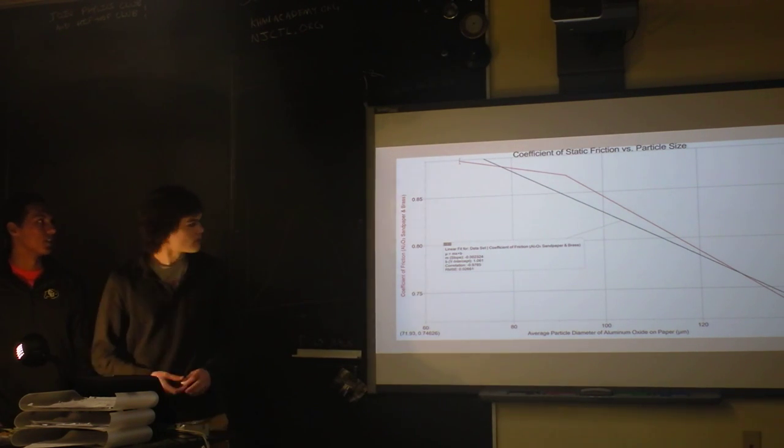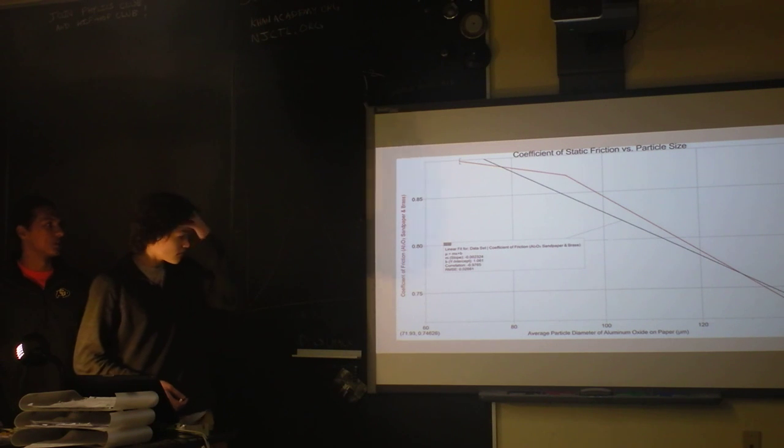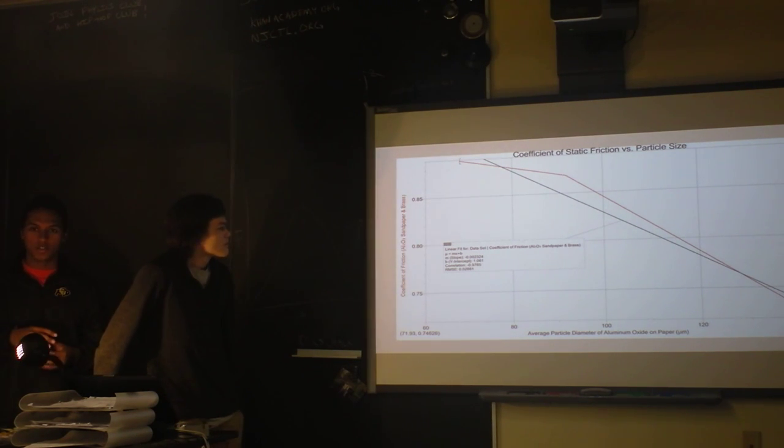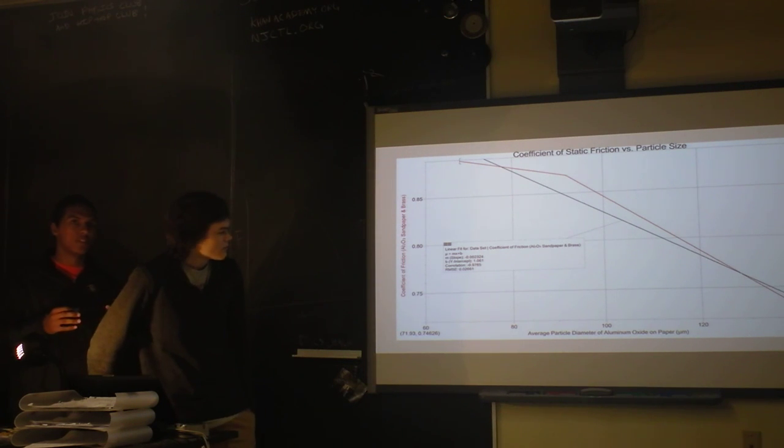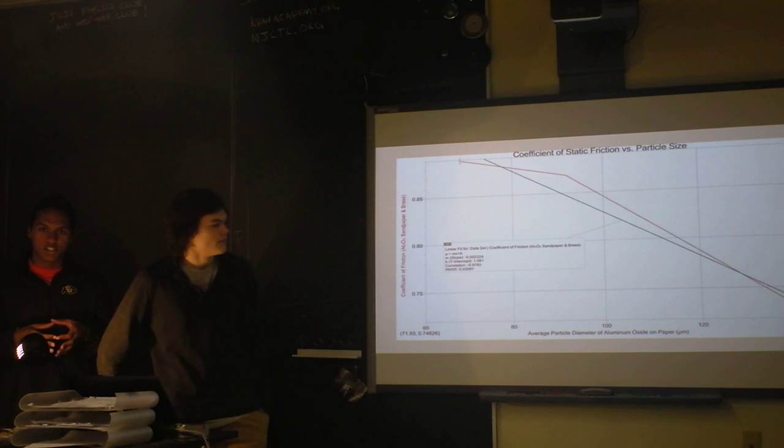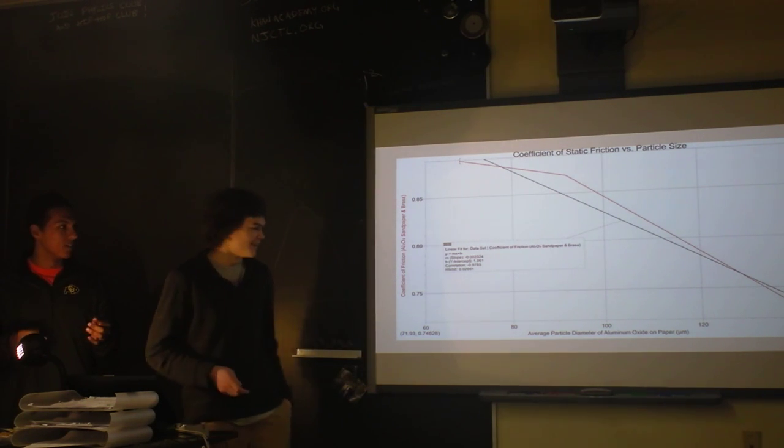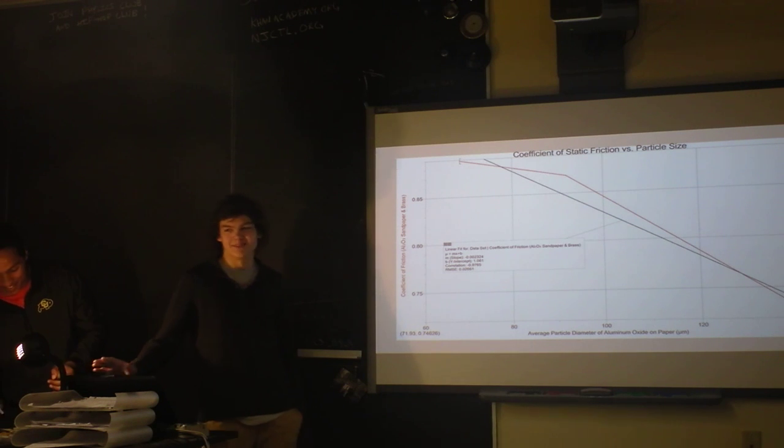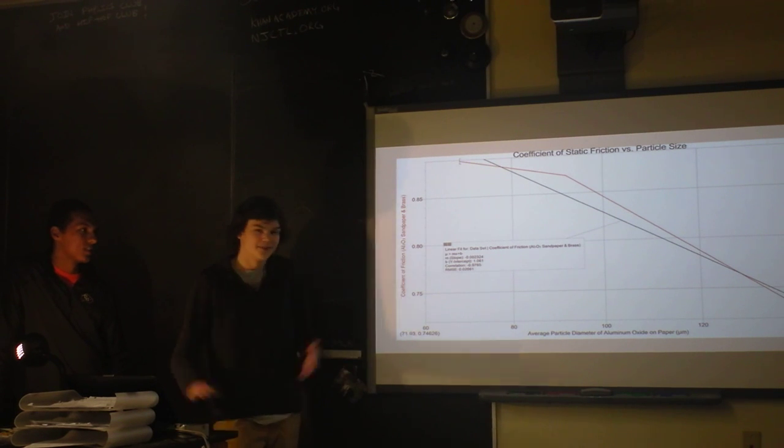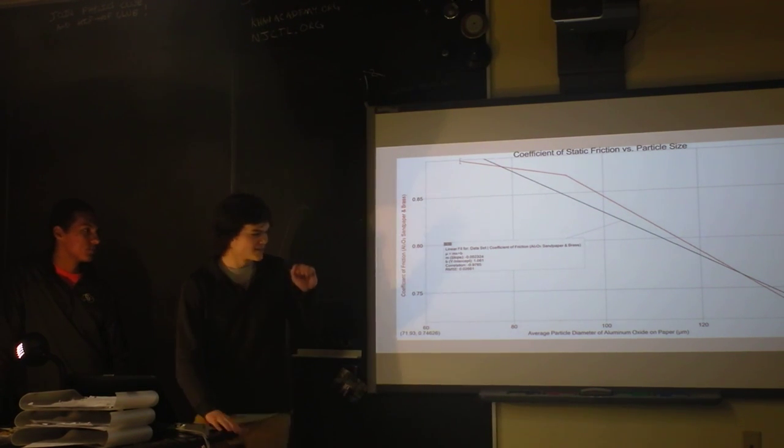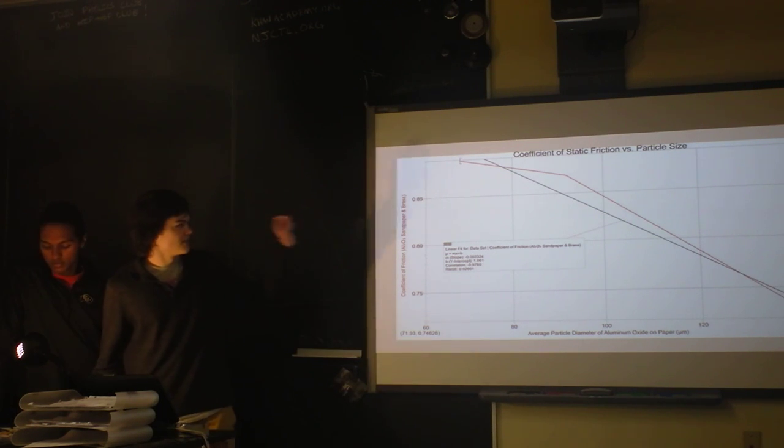We didn't put it for some reason. What we got from this graph actually took us like an hour to figure out how to actually say it, but basically as the particle size or diameter of the aluminum oxide particles decreased, the friction got less because we kept the density of the particles in a given area the same. Wait, am I wrong? You're wrong.